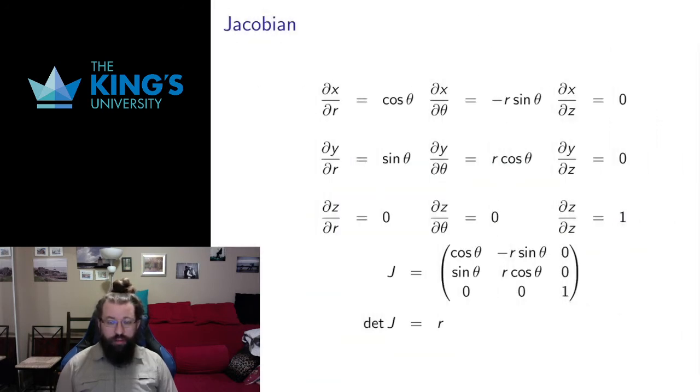I need the Jacobian. If I'm going to do change of variables with integration with different coordinate systems, I need to know what the Jacobians are. So I take the coordinate transformation equations from the previous page. There are three inputs, R, theta, and z, and three outputs, x, y, and z. So I get nine different partial derivatives. I've calculated them all here.